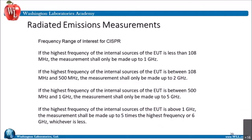Radiated emissions measurements frequency range of interest. This came out in the CISPR 22 standard and is essentially the same table we just looked at, except for one point: if the highest frequency of the internal source of the EUT is above 1 GHz, measurements shall be made to five times the highest frequency or 6 GHz, whichever is less. So devices don't have to go above 6 GHz when working with CISPR standards for unintentional radiators.